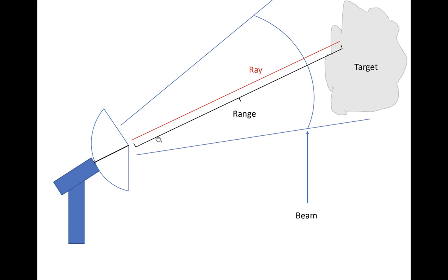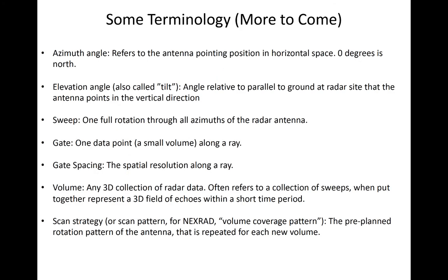The range is simply the distance along the ray from where an echo is detected. The range is one of three coordinates for describing the location of radar echoes in polar coordinates. The other two are the azimuth and the elevation angles. The elevation angle is sometimes also called the tilt.